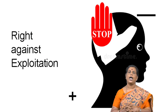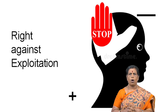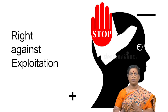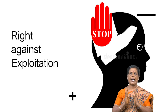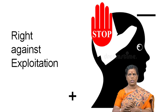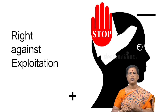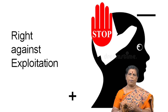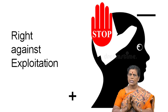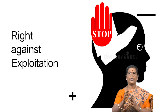Right against exploitation means no one can exploit or cheat others. We should not exploit anybody. By this right against exploitation, child labour, trafficking in human beings, and degradation against women are all strictly prohibited. We should not support child labour or derogation against women. That is the right against exploitation.